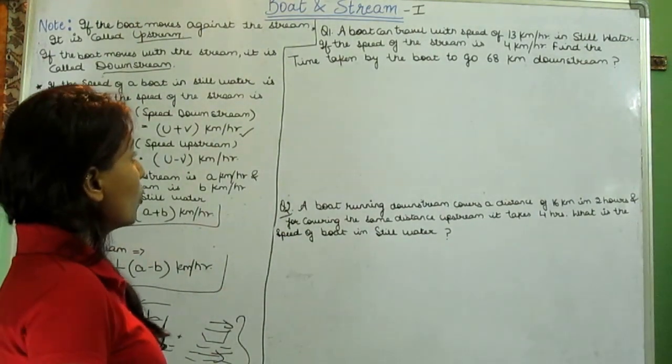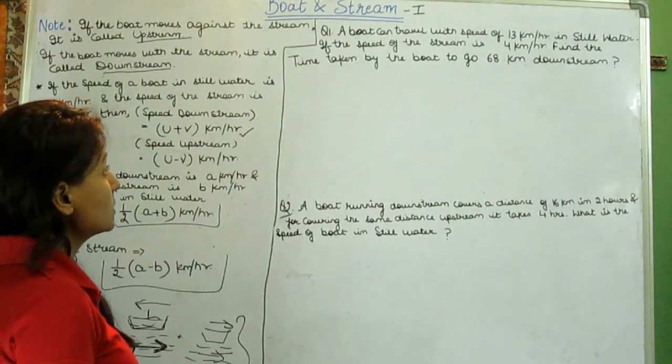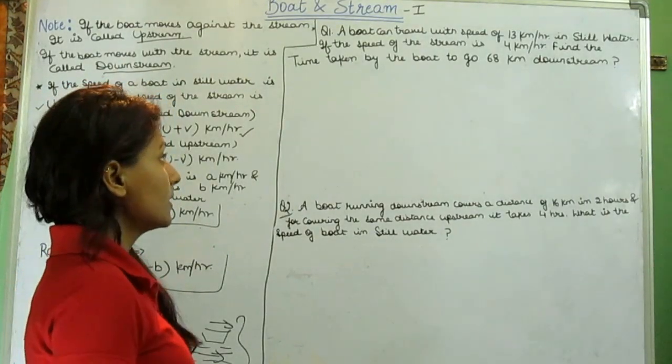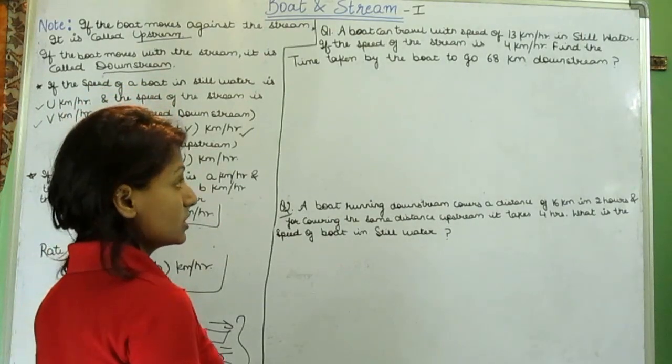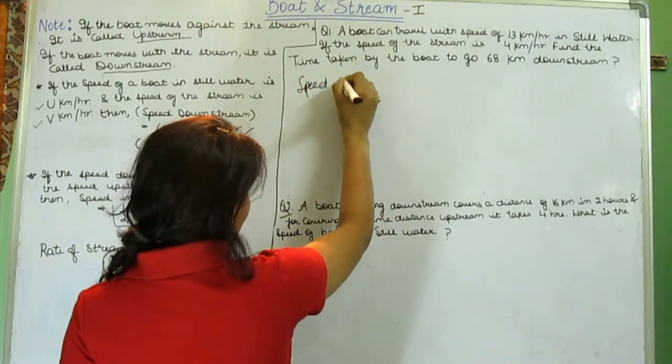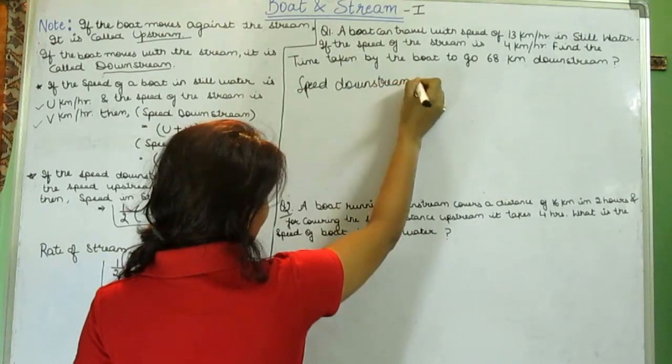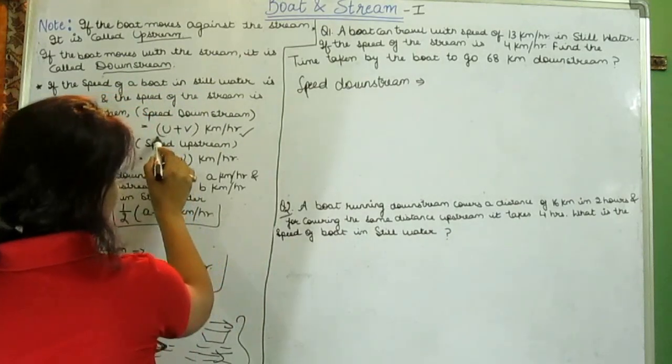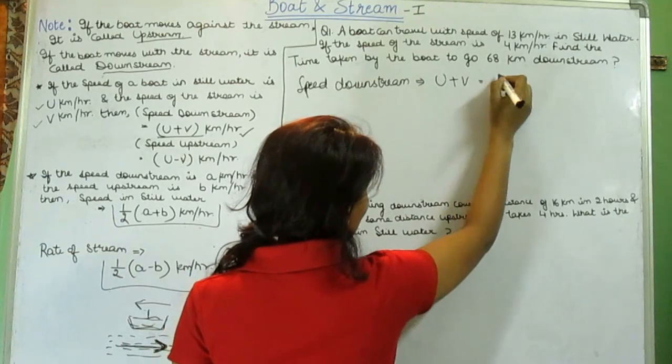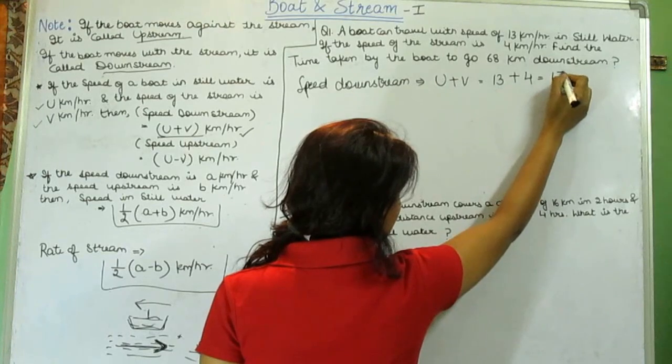First question is, a boat can travel with speed of 13 km/hr in still water. If the speed of the stream is 4 km/hr, find the time taken by the boat to travel 68 kilometers downstream. So they are talking about speed downstream. Speed downstream means u plus v, u is 13 and v is 4, this is 17.